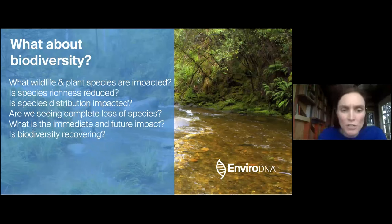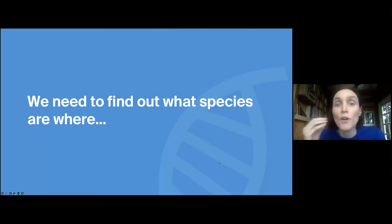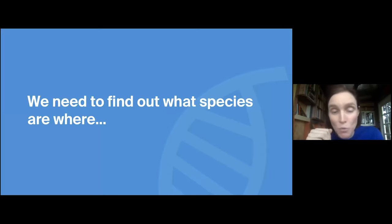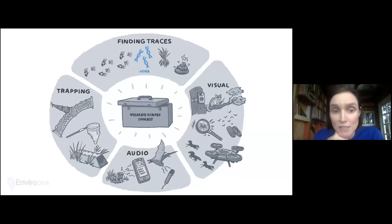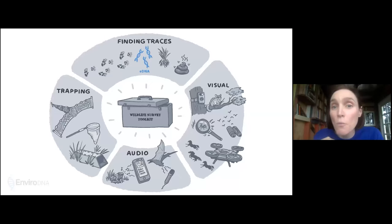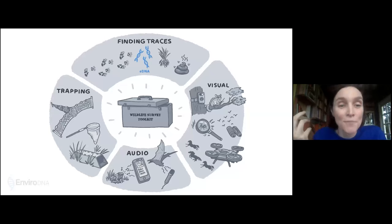Other questions include: what is the immediate and future impact after these disastrous events, and is biodiversity recovering as a result of intervention efforts or as time passes? At a minimum, we need to answer: what species are where — that's the starting point data we need to understand impacts on biodiversity. Many of you would be familiar with conventional wildlife survey techniques: visual spotting, spotlighting for nocturnal animals, spotting birds, audio surveys for frog calls.